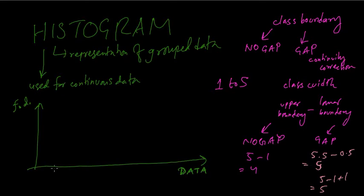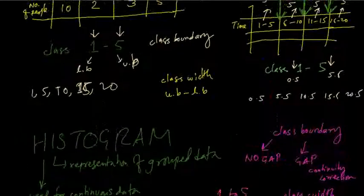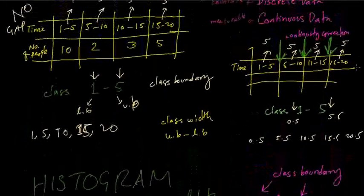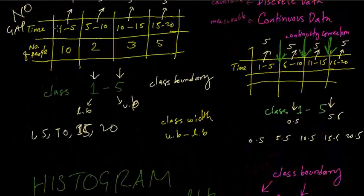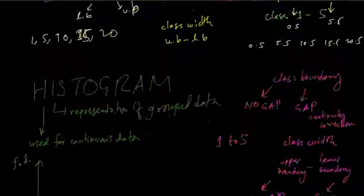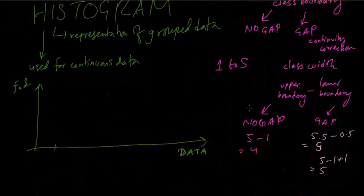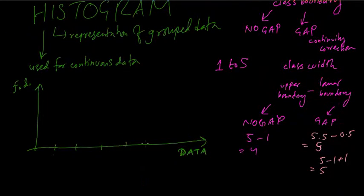For the histogram with no gap, the class boundaries on the x-axis are 1, 5, 10, 15, 20. The histogram looks like buildings or rectangles drawn at these boundaries. Although the frequency values are 10, 2, 3, and 5, these do not give us exact data — they are rough groupings indicating approximately how many people fall in each time range.